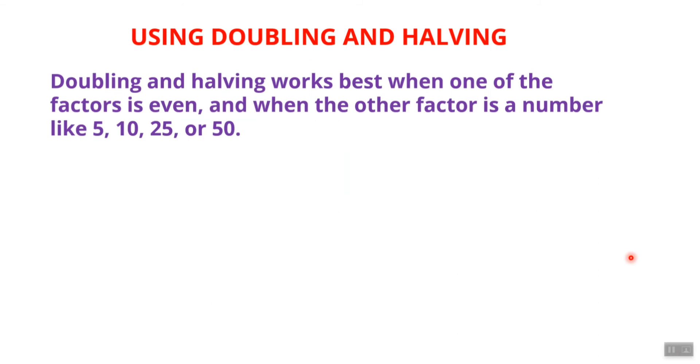Doubling and halving works best when one of the factors is even and the other factor is a number like 5, 10, 25, or 50. Then it's easier to solve using this strategy.